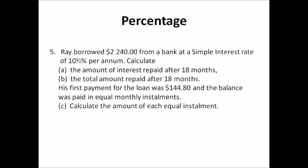Number five: percentage. Ray borrowed two thousand two hundred and forty dollars from a bank at a simple interest rate of ten and a half percent per annum. Calculate: a) the amount of interest paid after 18 months; b) the total amount paid after 18 months. His first payment was $144.80 and the balance is paid in equal monthly installments — c) calculate the amount of each installment. The formula for simple interest is PRT/100. The rate is 10.5%, so change that to an improper fraction — you'll have 200 on the bottom. The amount equals simple interest plus principal.